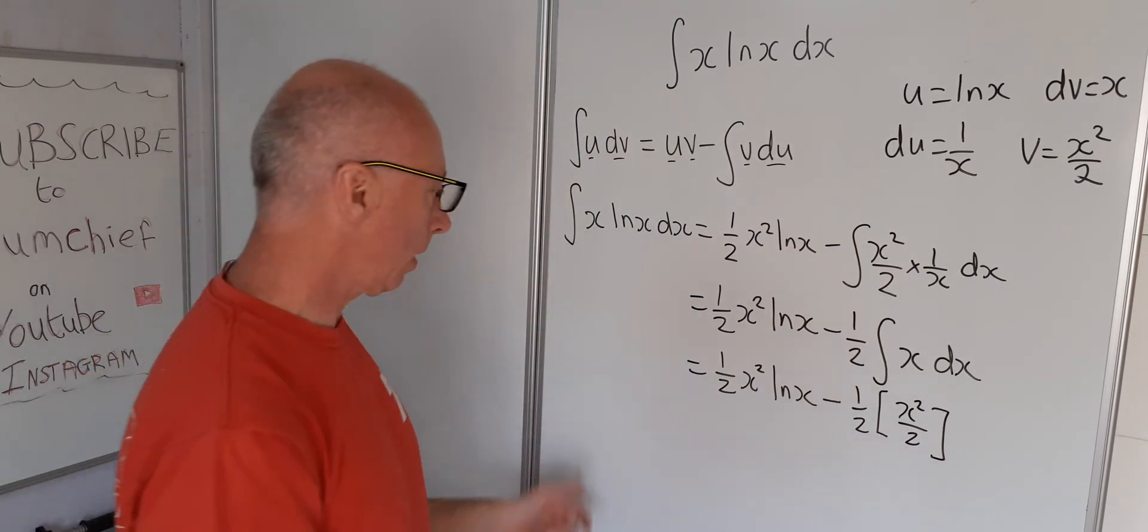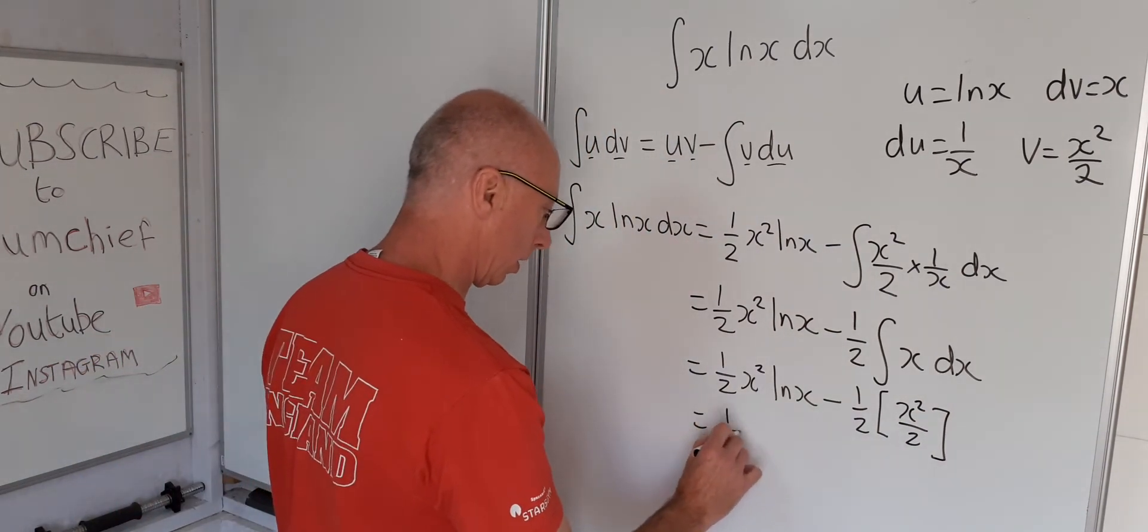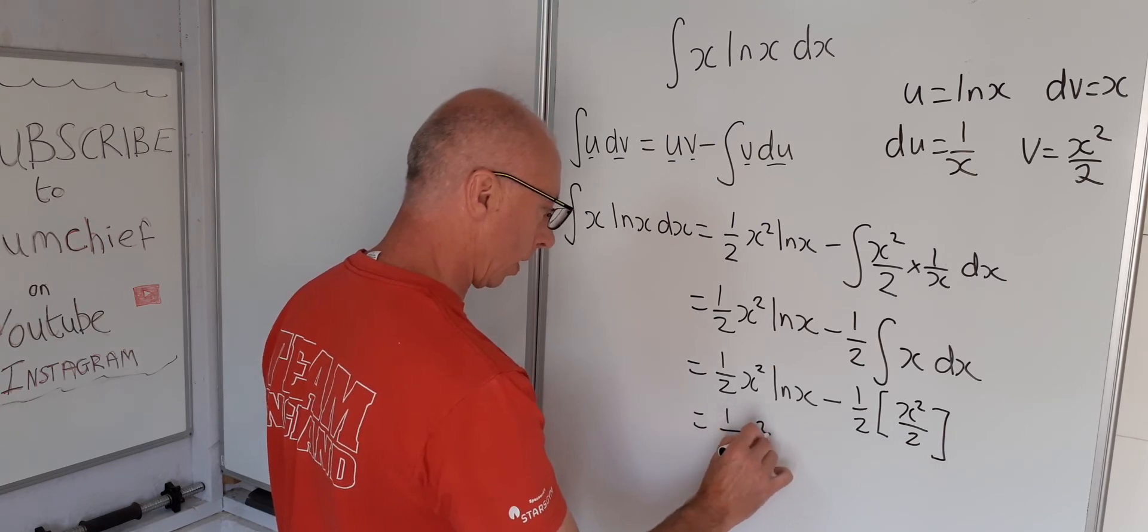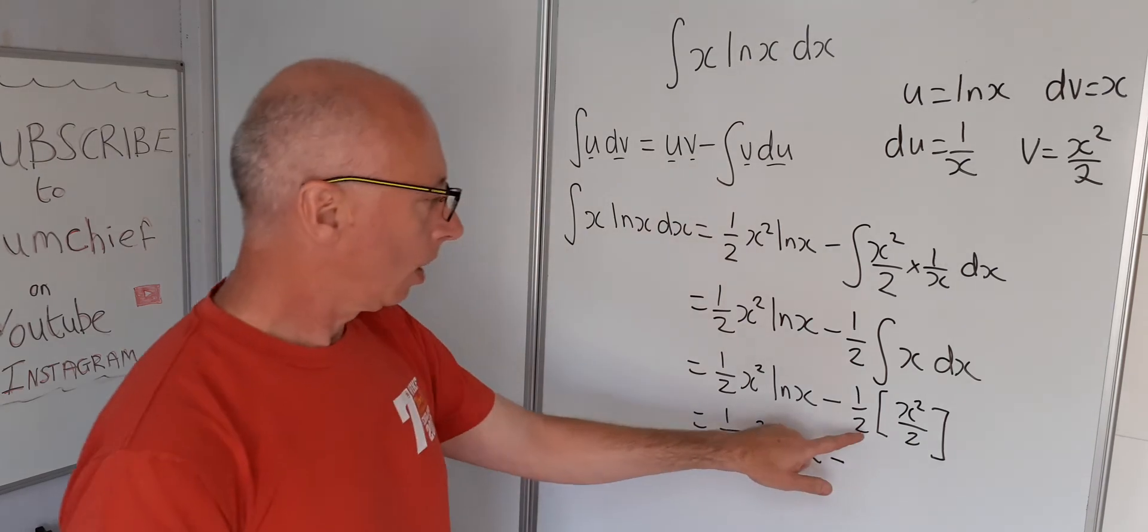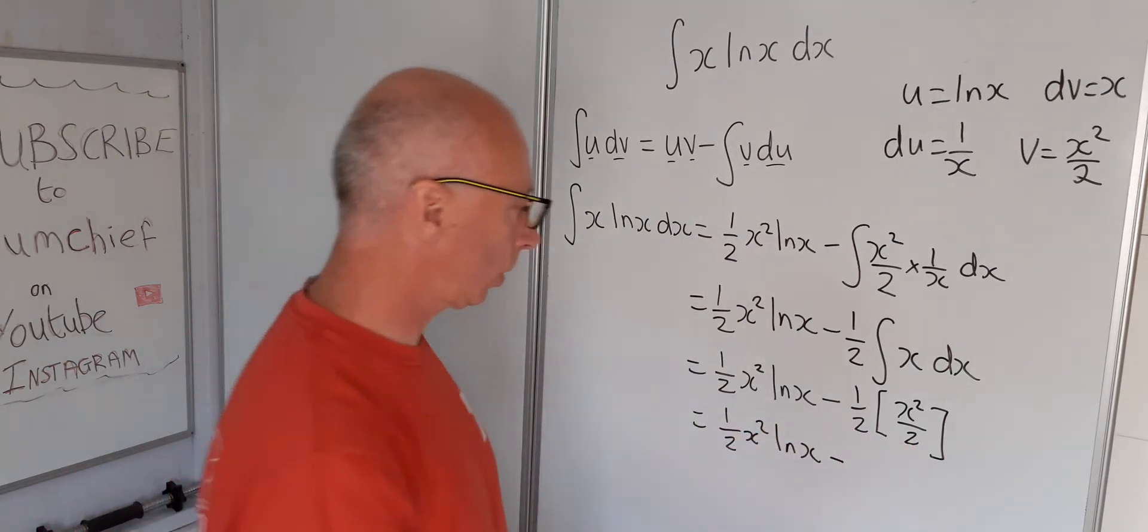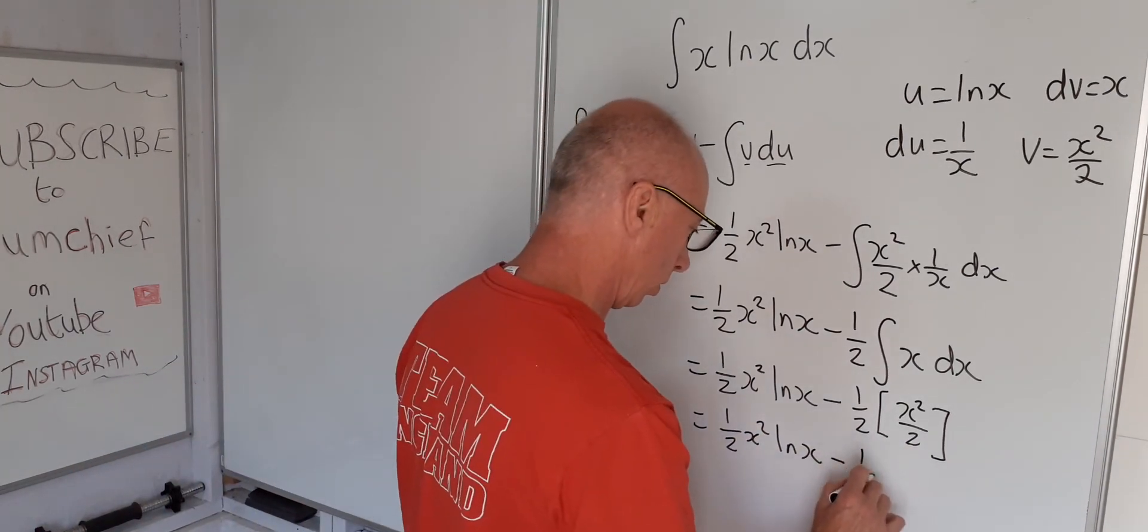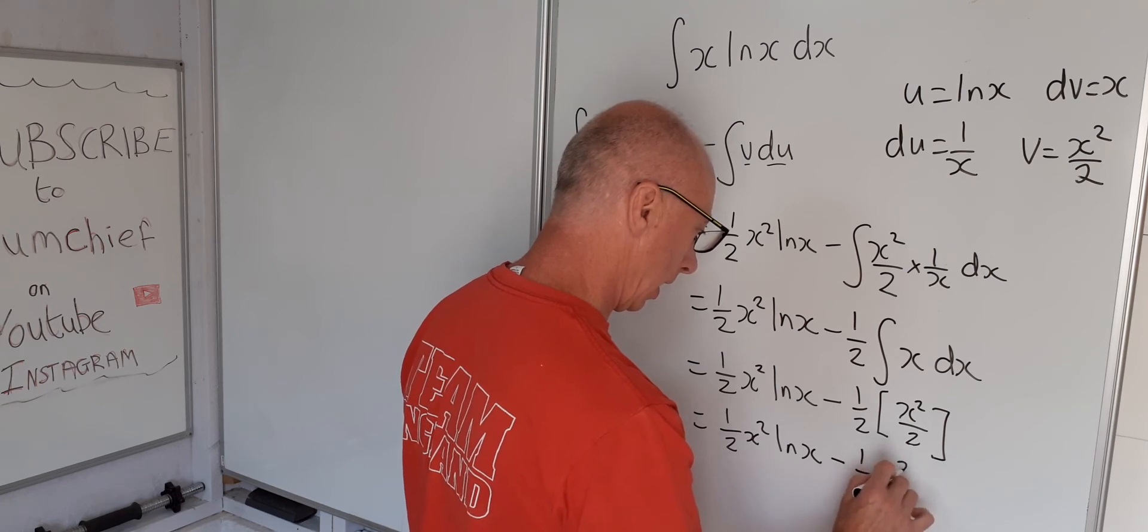Okay, we have nothing else to do now so let's simplify this up. So half x squared natural log of x minus one half and the 2 gives us a quarter, so one quarter x squared